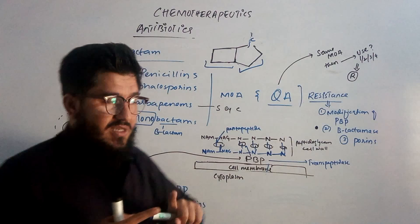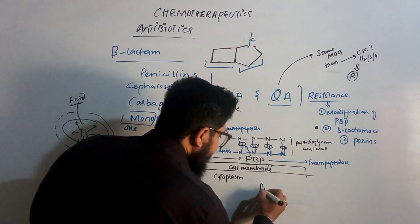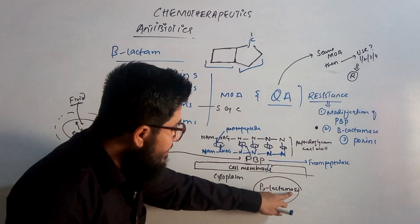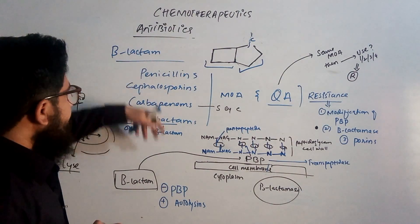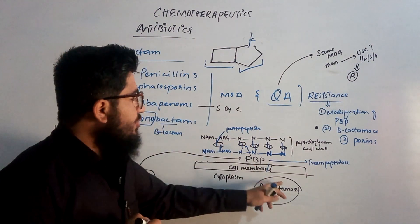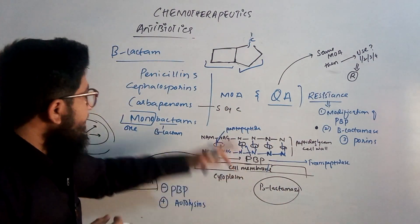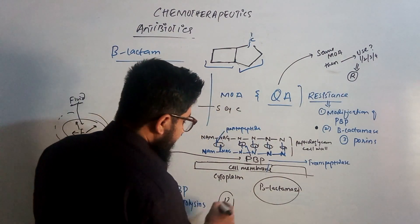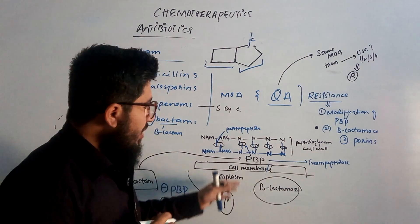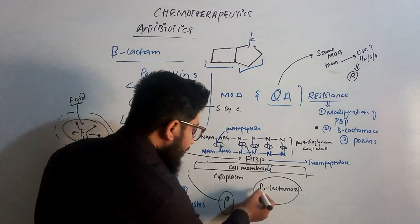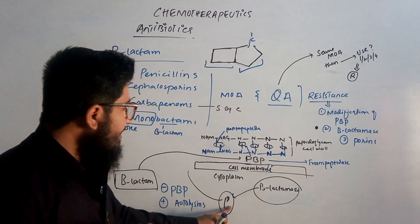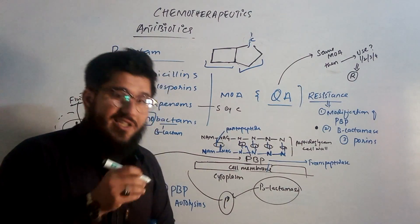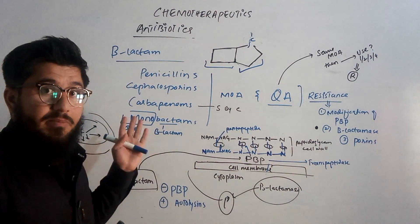The bacteria develop enzymes called beta-lactamases. These enzymes catalyze and break the beta-lactam ring. Since all beta-lactam antibiotics have this ring, the beta-lactamase breaks it. When we administer penicillin to bind to the penicillin binding protein, the bacteria's beta-lactamase destroys the beta-lactam ring of the penicillin, so penicillin can no longer bind to the PBP — its functional unit has been destroyed.